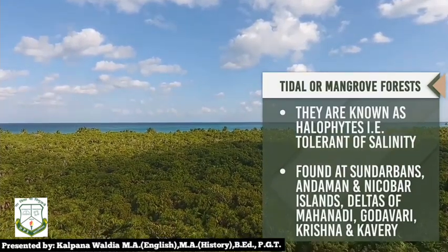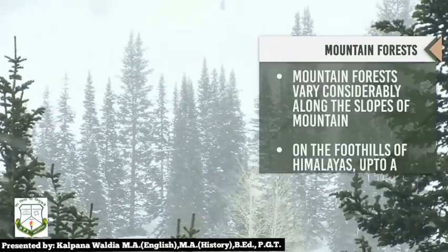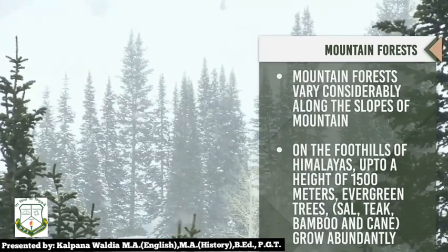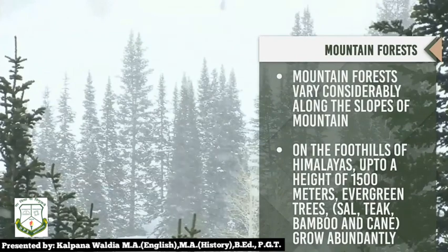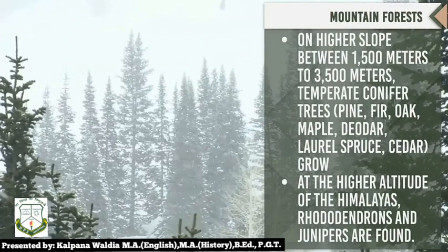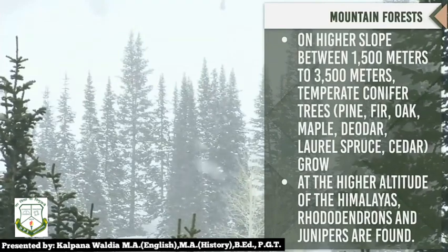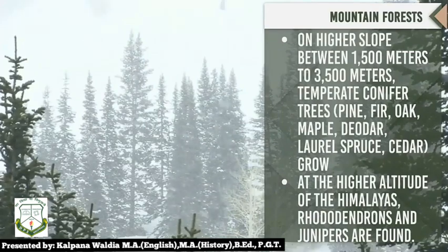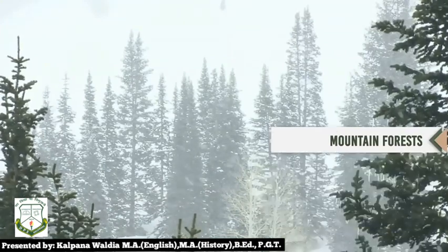Next comes mountain forest. These forests vary considerably along the slope of mountains. On the foothills of the Himalayas up to a height of 1,500 meters, evergreen trees like sal, teak, bamboo, and cane grow abundantly. On the higher slopes between 1,500 meters to 3,500 meters, temperate coniferous trees like pine, fir, oak, maple, deodar, laurel, spruce, and kedar grow. Beyond these vegetation belts, alpine grassland appears up to the snowfield.